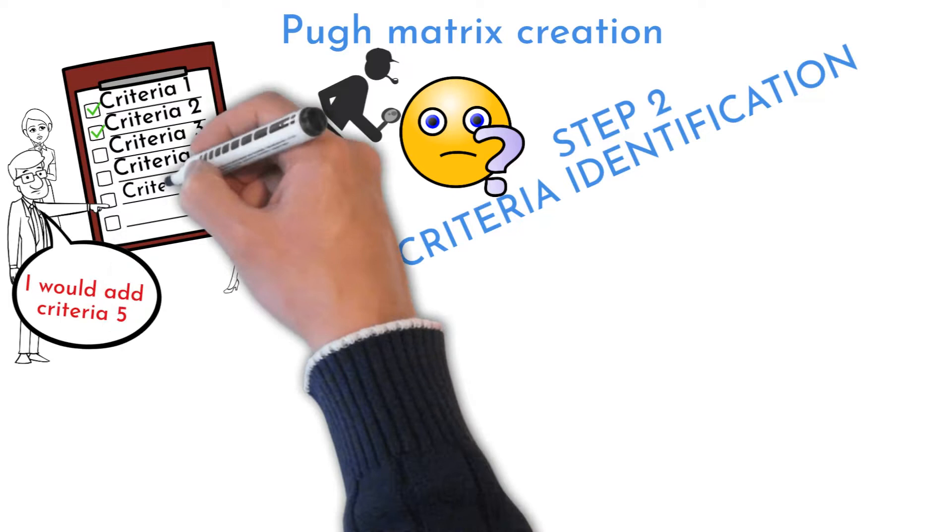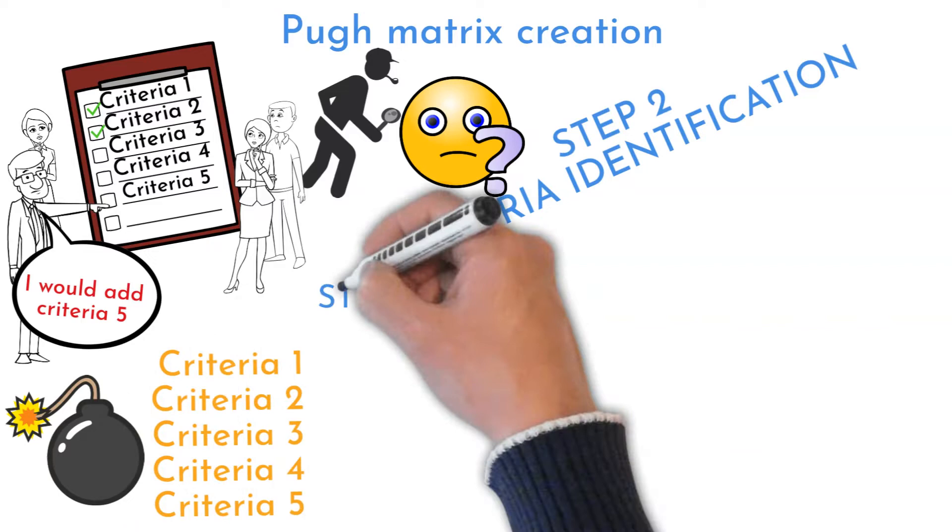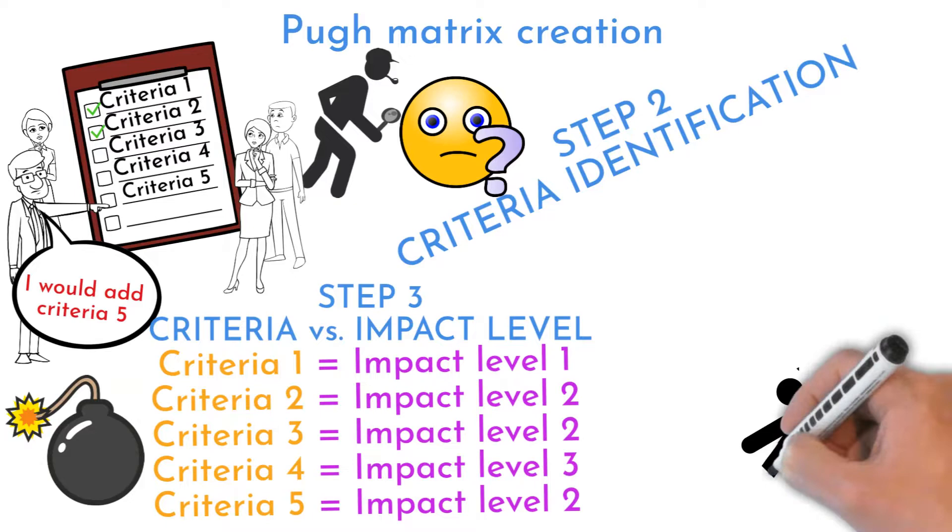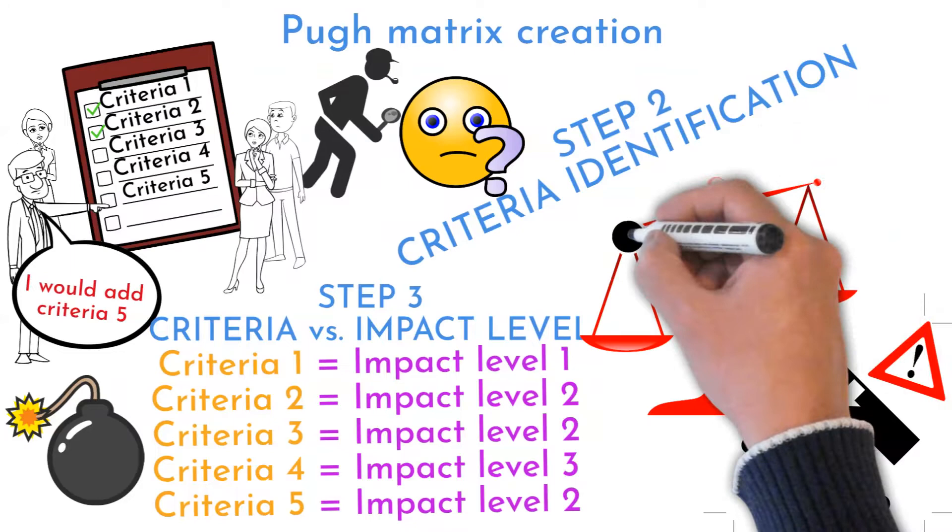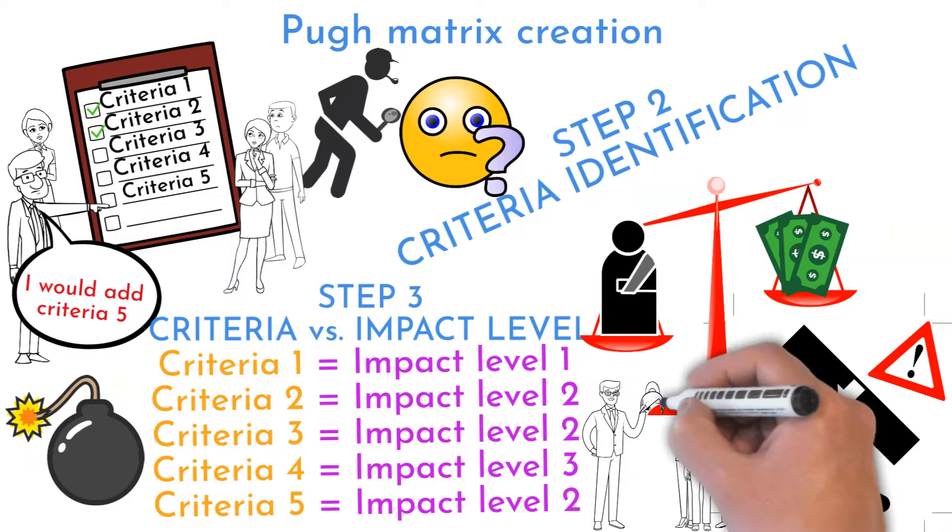Impact level for each criteria sets criteria importance from final solution expected properties or business perspective. Let me give you an example. When choosing solution that should improve some risks at workplace, safety criteria should have higher impact level than the price of the solution. Discuss and agree within team on each criteria weight.